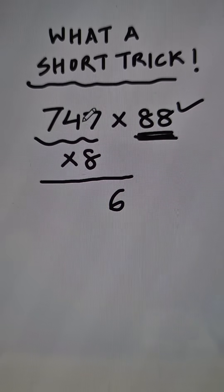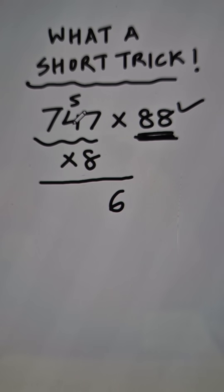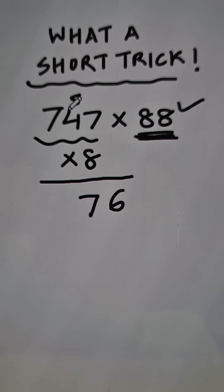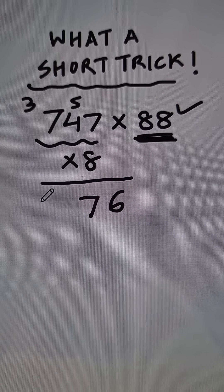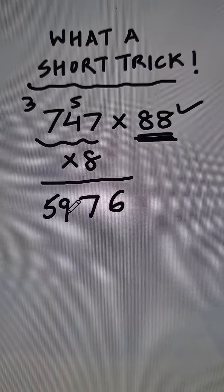So 8 times 7 is 56, so we have a 5 carry. 8 times 4 is 32 plus 5 equals 37, so 7 and a 3 carry. 7 times 8 is 56 plus 3 equals 59. So we have 5976.